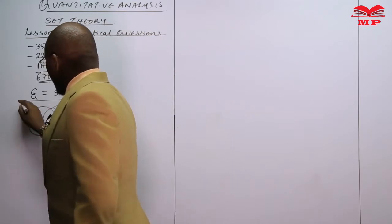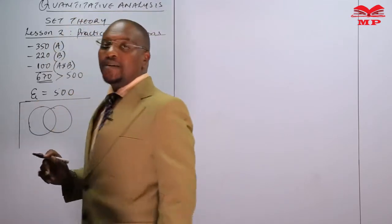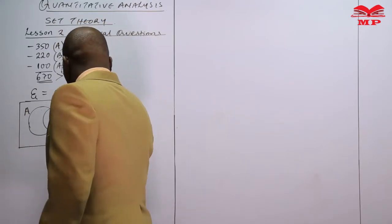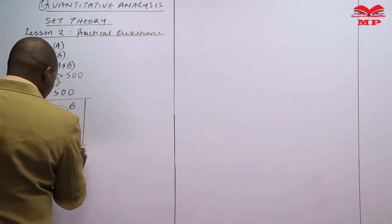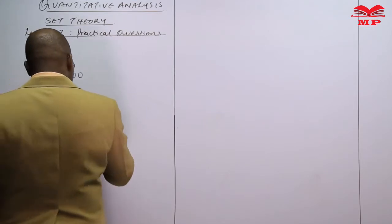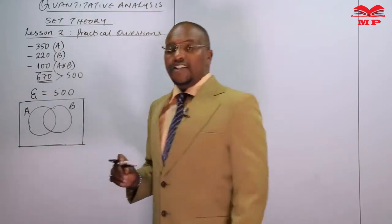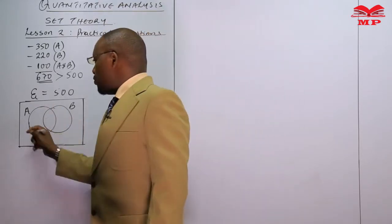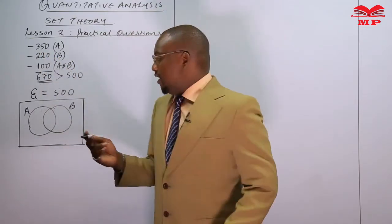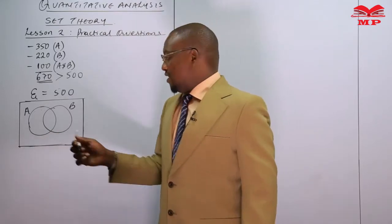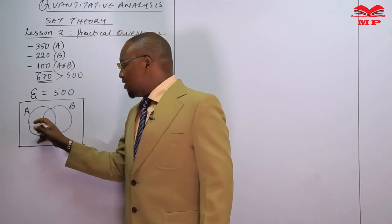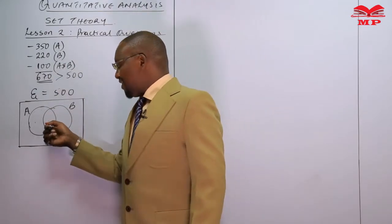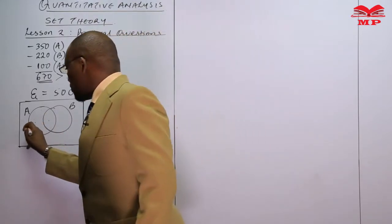Set A and set B represent the number of consumers who like product A and product B respectively. We have 500 total consumers surveyed. Looking at circle A, it has two sections — when you add them together they should give you 350. So you cannot record 350 inside just one part of the circle; we present the total as 350 for the whole of A.